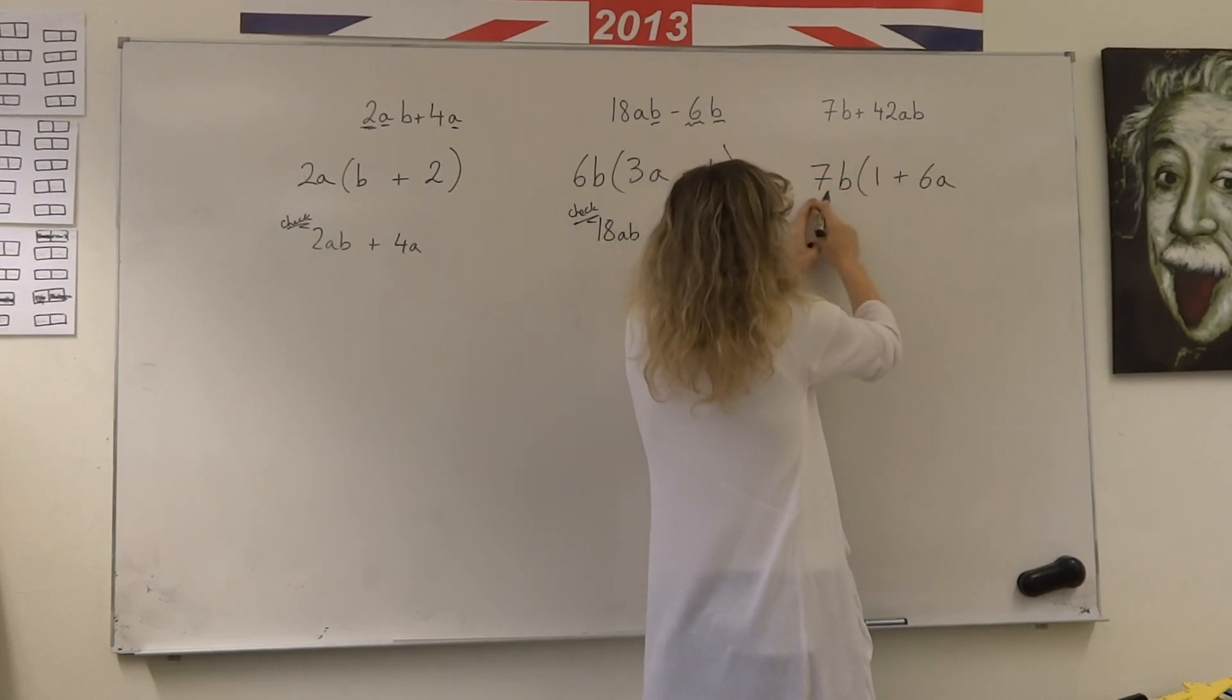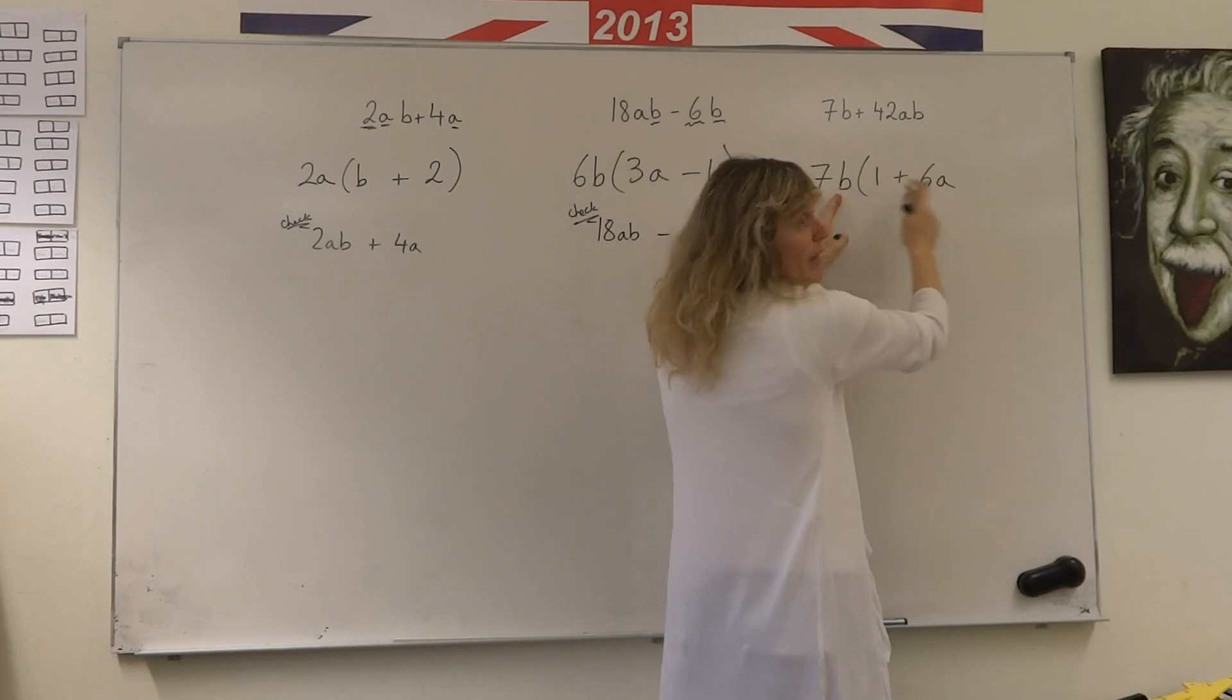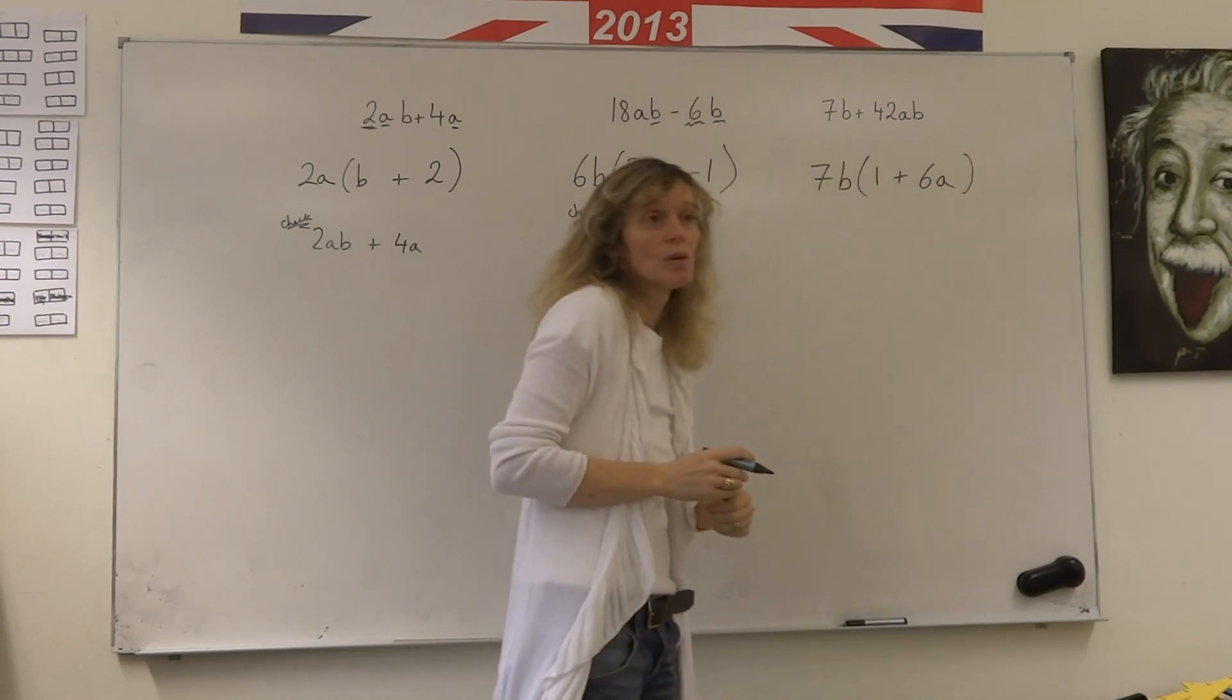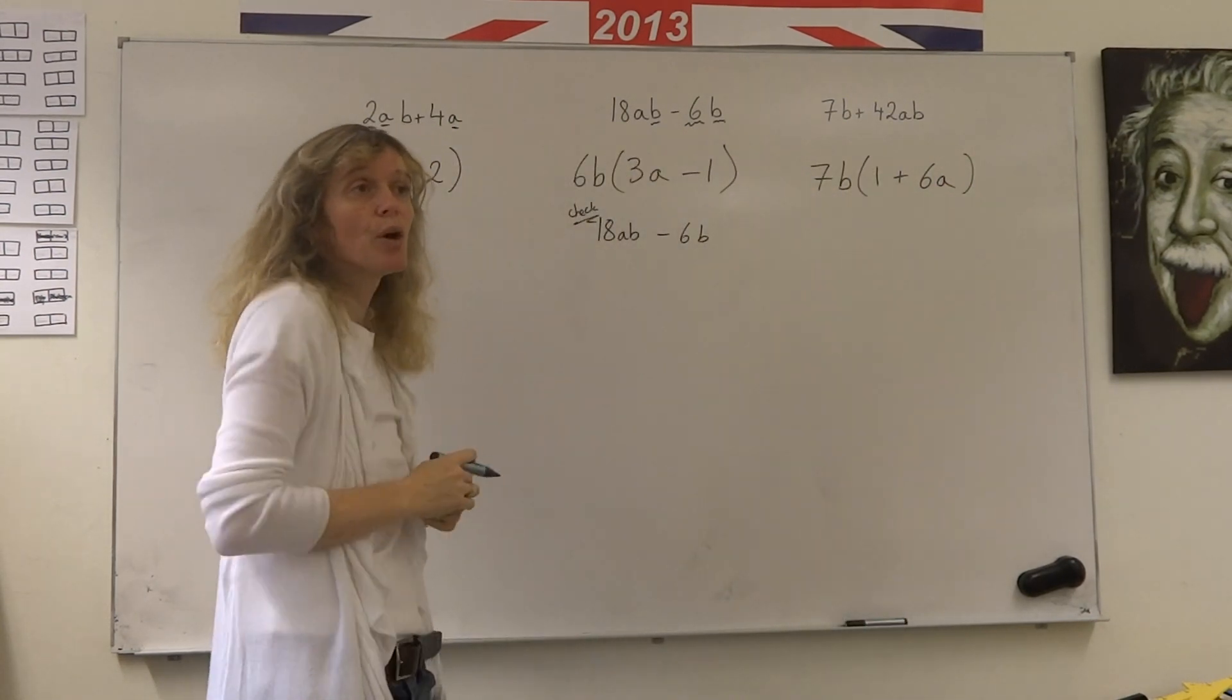And 7B multiplied by 6A would give me 42AB. 6 times 7 is 42. A times B would give me AB. So factorising is just working backwards.